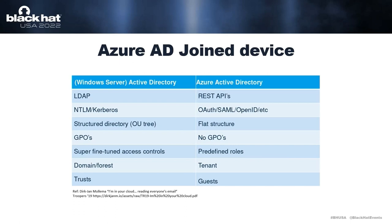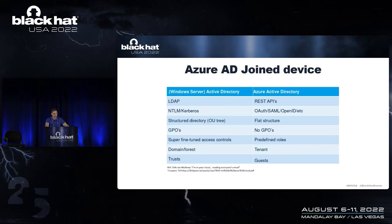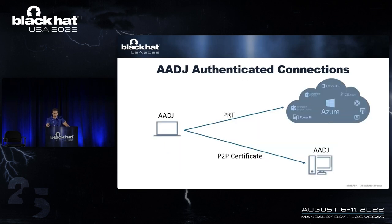A side note: I am not going to talk about hybrid devices, which are connected to both Azure AD and on-prem. Everything I'm going to show is applicable to hybrid devices too, but since you already know how to perform lateral movement in a domain environment, I will only focus on Azure AD joined devices.